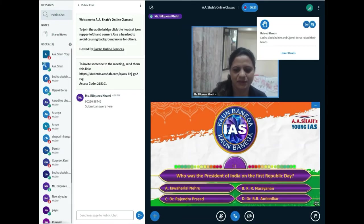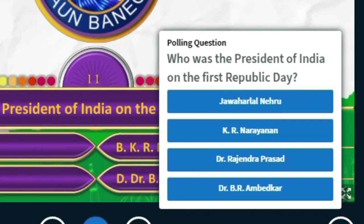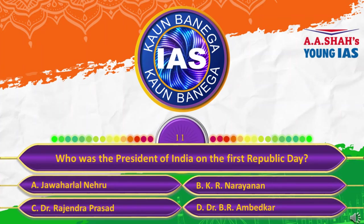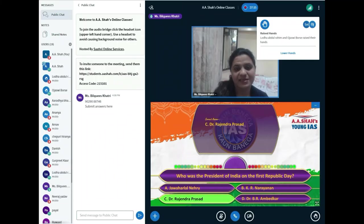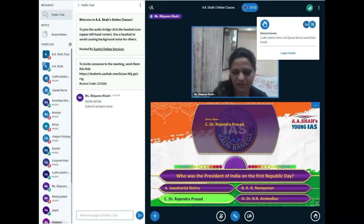The eleventh question: Who was the president of India on the first Republic Day? The correct answer is Dr. Rajendra Prasad. He was the first president of India and the president at the time of the first Republic Day as well.